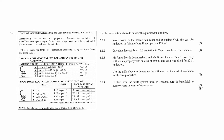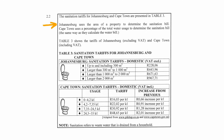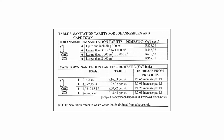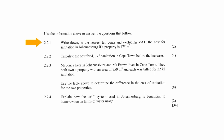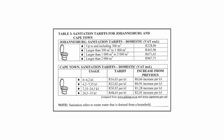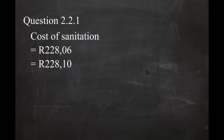Question 2.2 consists of four finance questions designed to assist your understanding of water tariffs. Johannesburg uses the area of a property to determine the sanitation bill, while Cape Town uses a percentage of the total water usage. Table 3 shows the tariffs for Johannesburg excluding VAT and Cape Town including VAT. In question 2.2.1, you have to write down to the nearest 10 cents, excluding VAT, the cost of sanitation in Johannesburg if the property is 175 square meters. According to Table 3, if a property is less than 300 square meters, the cost for sanitation is R228.06 cents excluding VAT. Rounding to the nearest 10 cents gives a cost of R228.10.